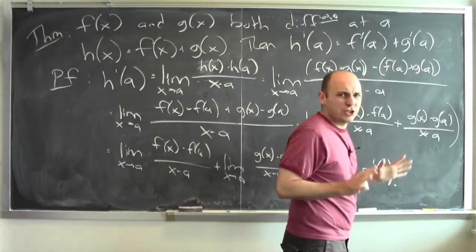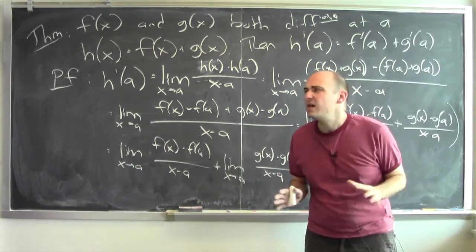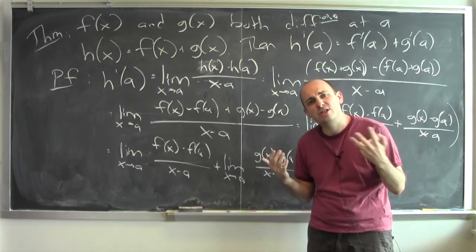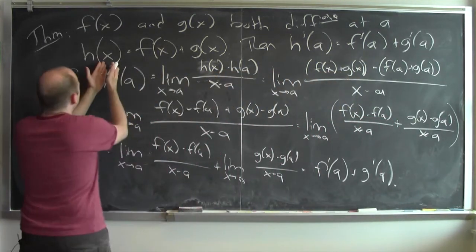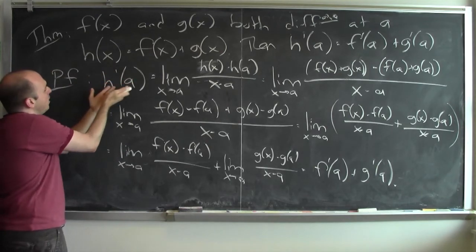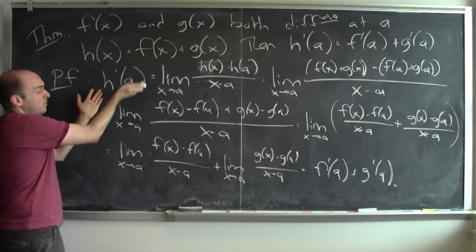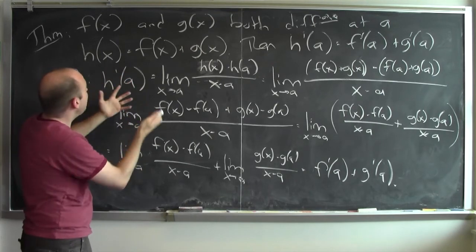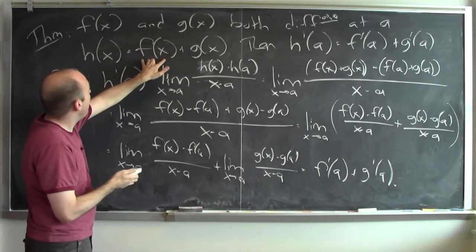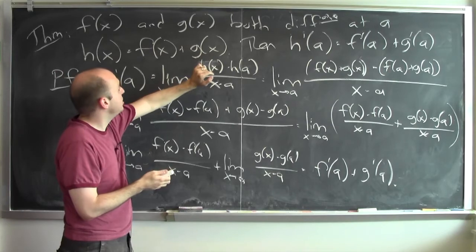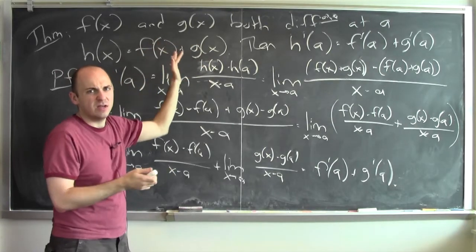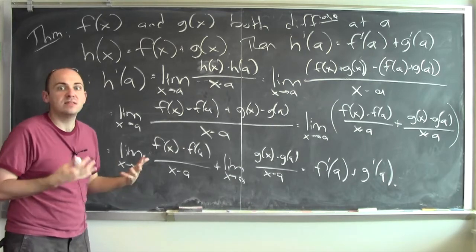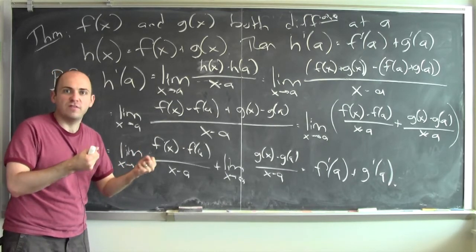And hopefully this should seem reasonable. What is the derivative measuring? It's measuring how much change in the input changes the output — how much wiggling the input a would affect the output of h. Well, that's really going to be connected to how wiggling the input to f changes f, and wiggling the input to g changes g. I'm just adding them together, so it makes sense that how the output changes would just be the sum of how these two component functions change.